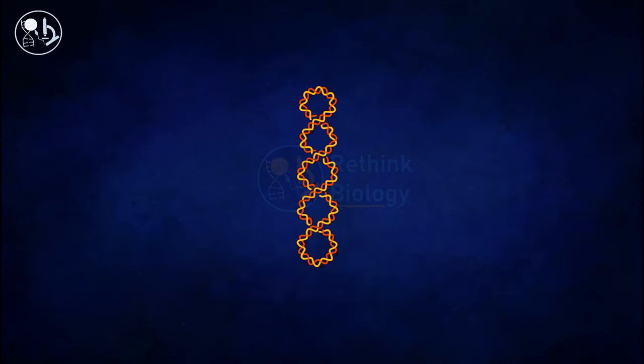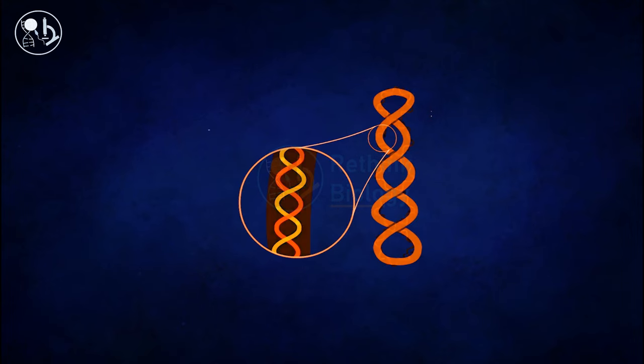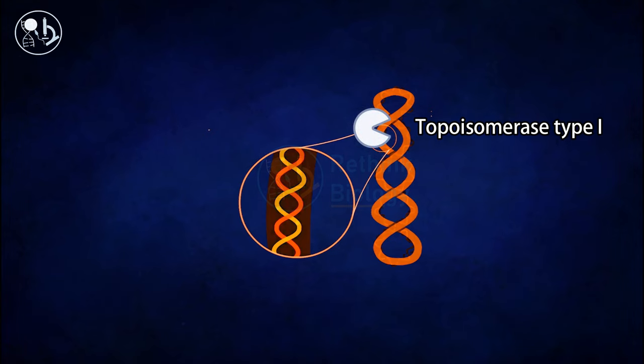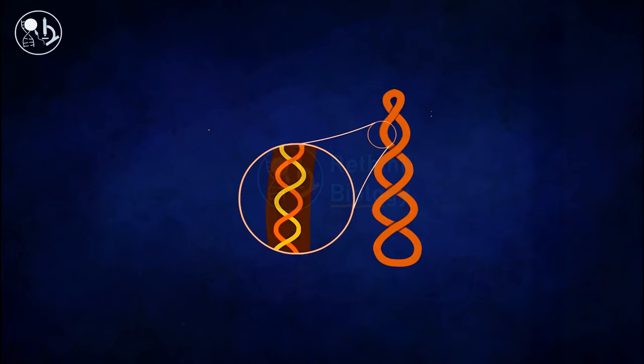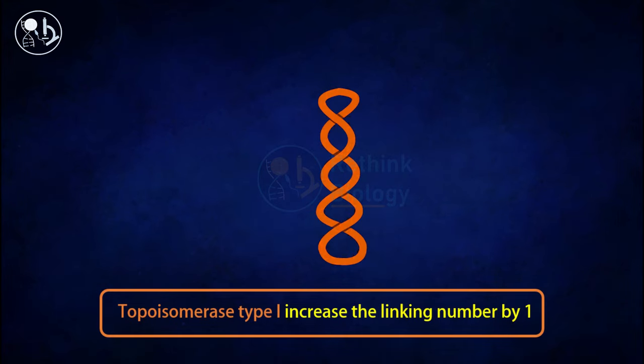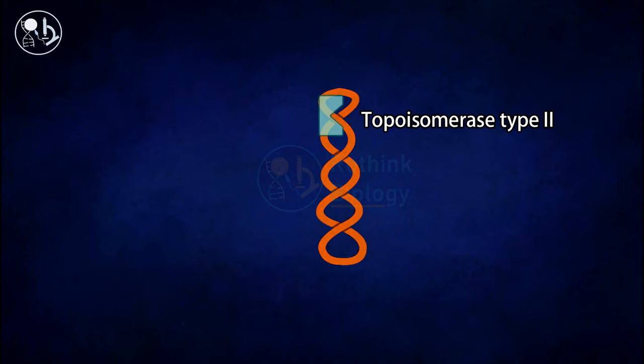There are enzymes which can change the topology of the DNA called topoisomerase. Topoisomerase type 1 increases the linking number by one, whereas topoisomerase type 2 changes the linking number by two.